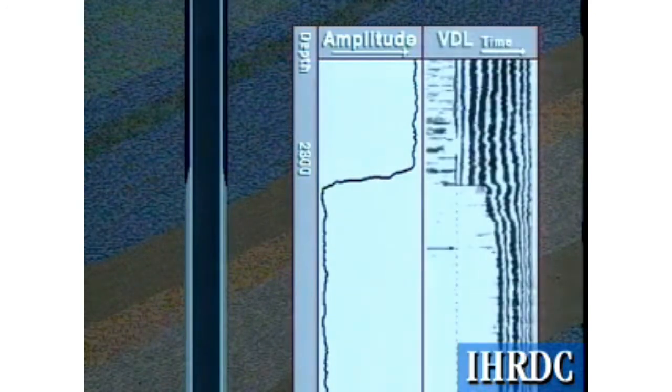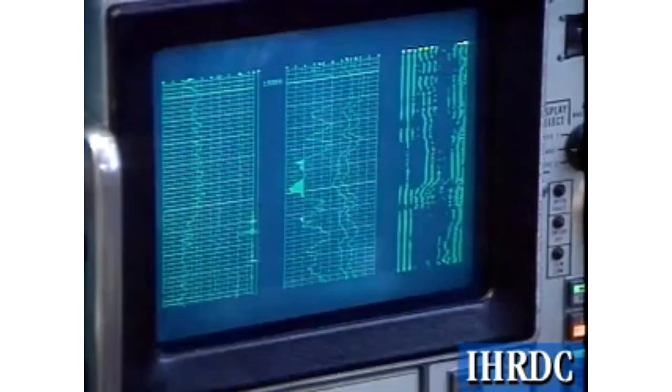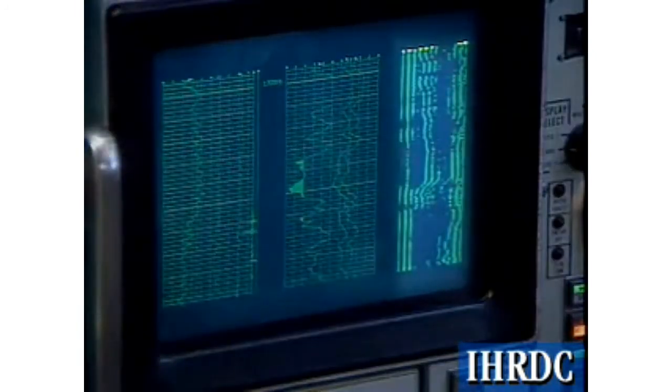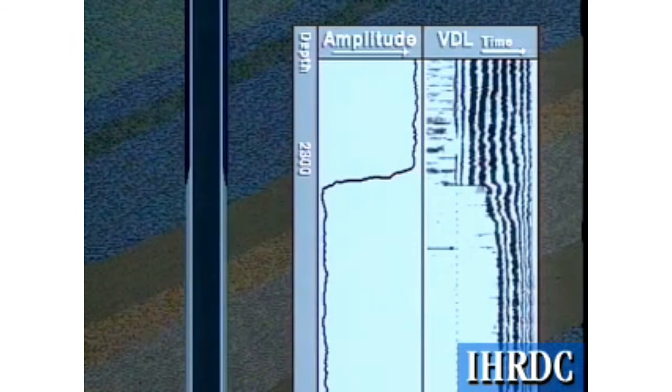The variable density log, or VDL, helps in that regard. Also displayed on the CBL, it is made up of numerous closely spaced exposures of the film by the positive wavetrain amplitudes. The result is a sort of contour map of the history of the wavetrain over the logged interval.